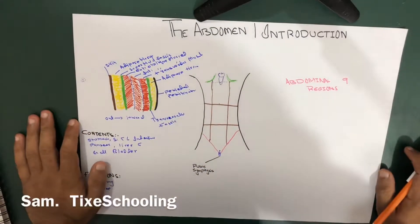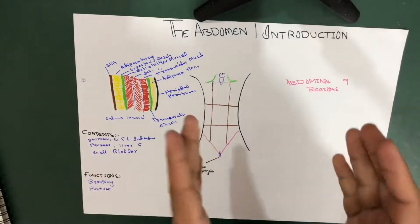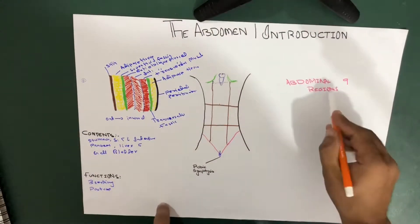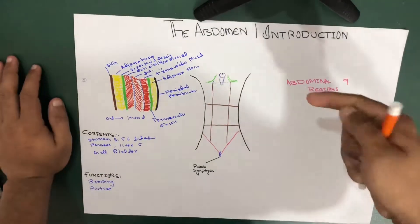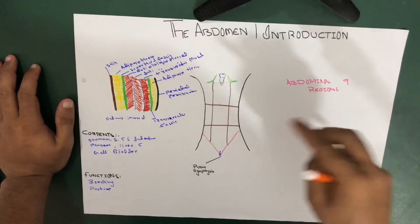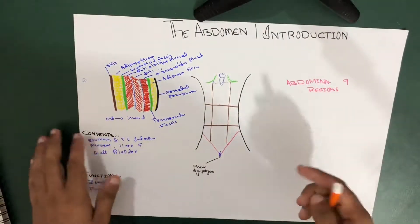Hello YouTube, this is Sam from Texas Cooling, and in this session of the video, we're going to talk about the divisions of the abdominal wall into the nine regions. So this is the second part of the abdomen. We have talked about the introduction in the earlier video. So now in this session, we're going to talk about the divisions of the abdominal wall.